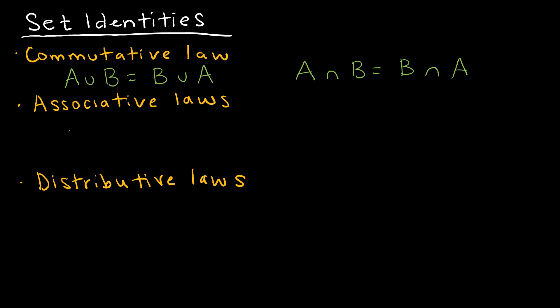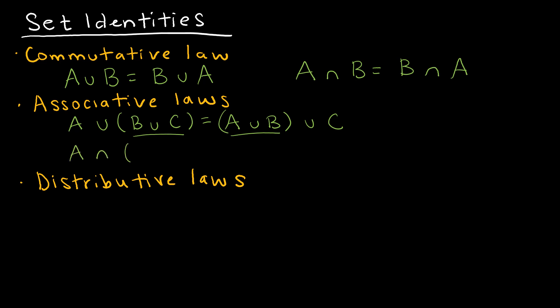The associative law says if I have A union B union C, it's the exact same thing as A union (B union C). Here I'm taking the union of B and C first, and there I'm taking the union of A and B first, but it all ends up the same. The same holds true for intersection — the order in which I perform the operations doesn't change the resulting set.